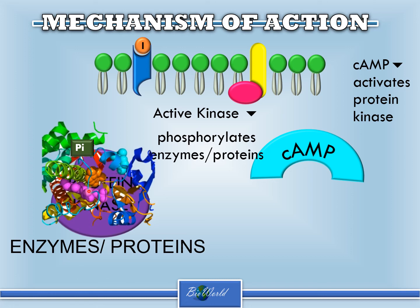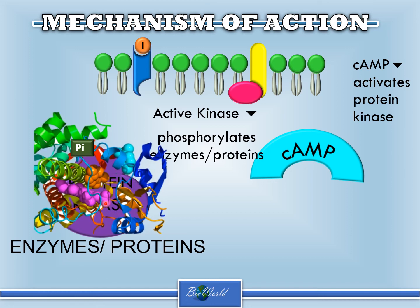In doing so, it will activate the enzyme or the protein. Using a specific example: insulin functions to convert excess glucose in our blood to glycogen. So the insulin hormone will cause the cyclic AMP to activate the protein kinase, and the protein kinase will go on to activate enzymes that can convert excess glucose into glycogen. In other examples, the enzymes and proteins will do other functions as required by the hormone.